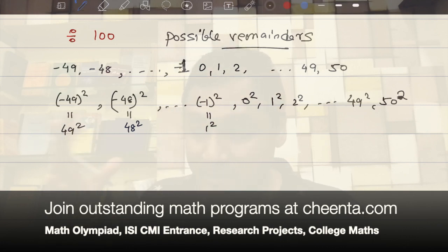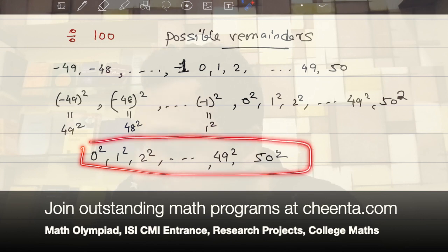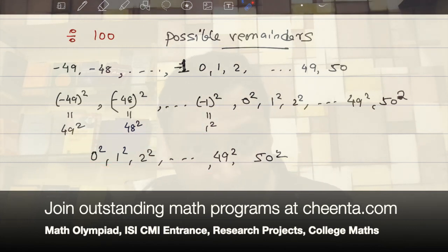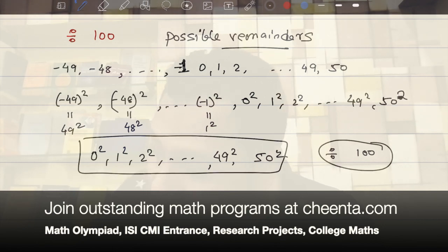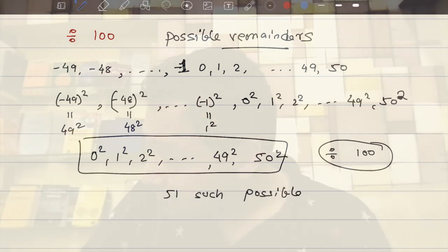So, what are the different ones, at least visually, what are the different ones? Well, 0 squared, 1 squared, 2 squared, up to 49 squared, 50 squared. How many of them do we get? How many visually different remainders do we get when we divide squares by 100? Well, we get 51, 51 such possible remainders. 51 such possible remainders, right?